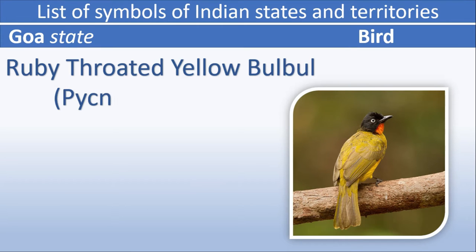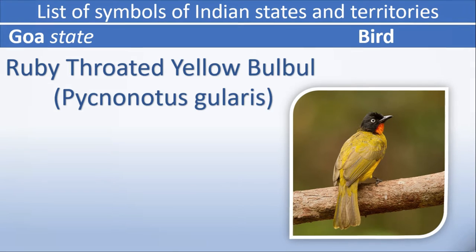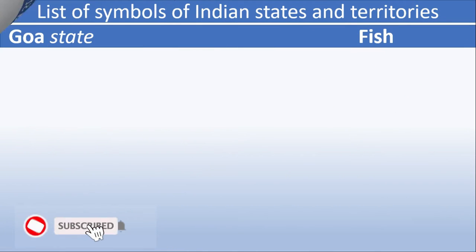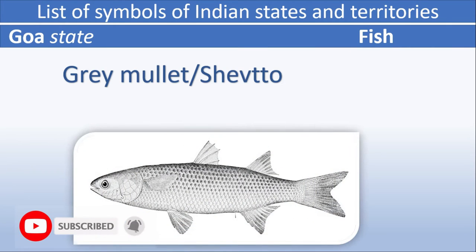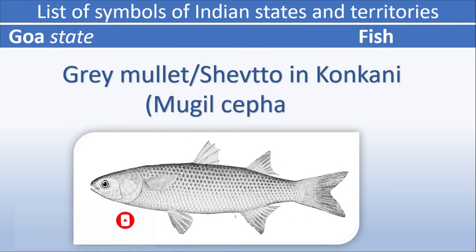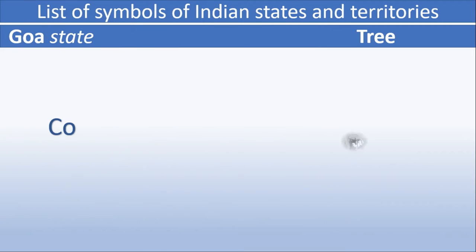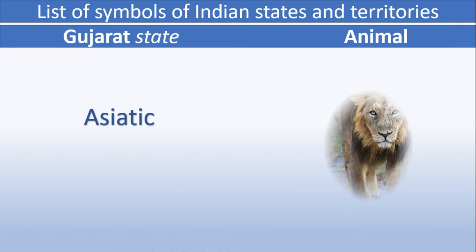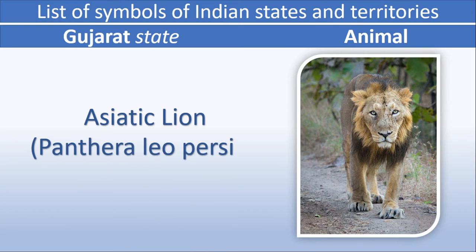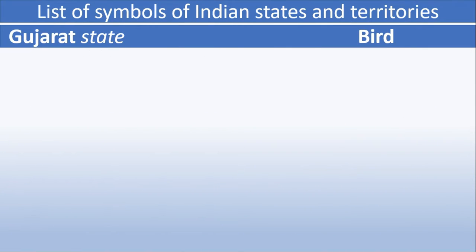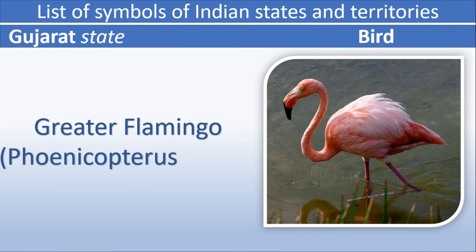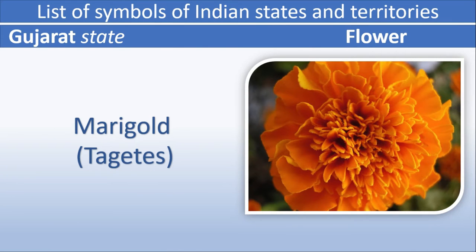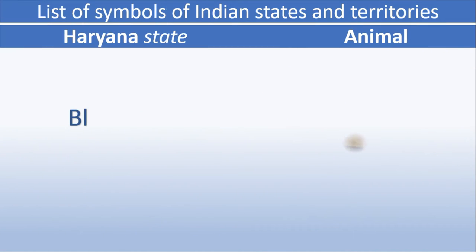Goa state animal: Gaur. Goa state bird: Ruby-throated Yellow Bulbul. Goa flower: Jasmine. Goa fish: Grey Mullet (Shevto in Konkani). Goa tree: Coconut Palm. Gujarat animal: Asiatic Lion. Gujarat bird: Greater Flamingo. Gujarat flower: Marigold.